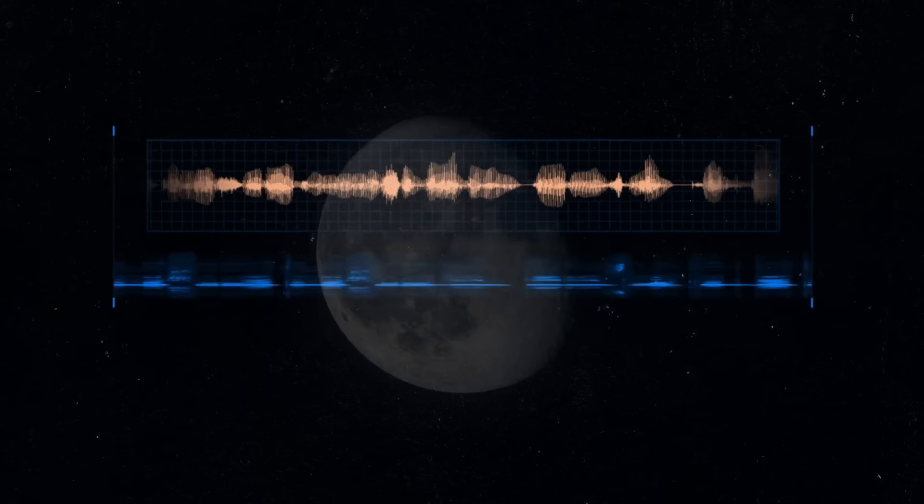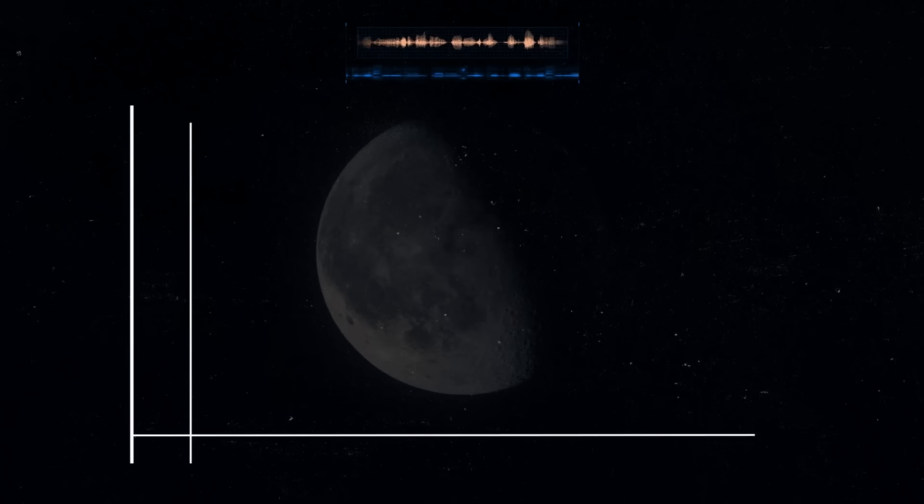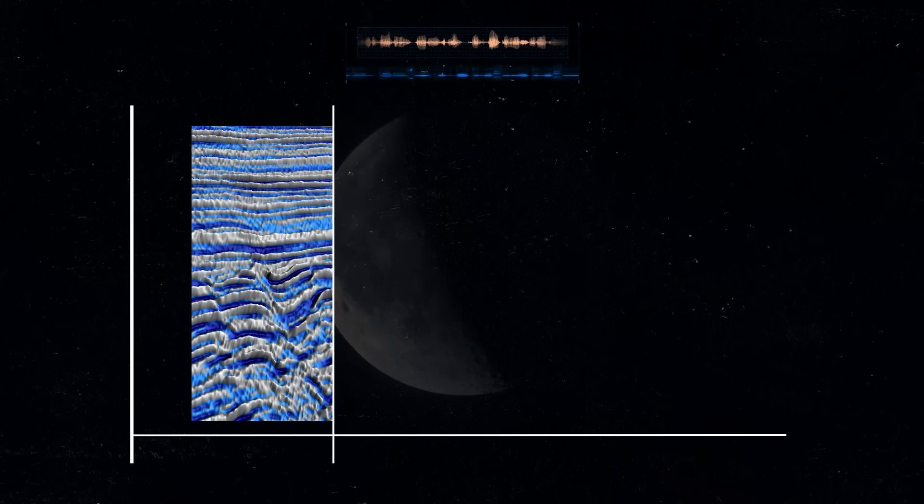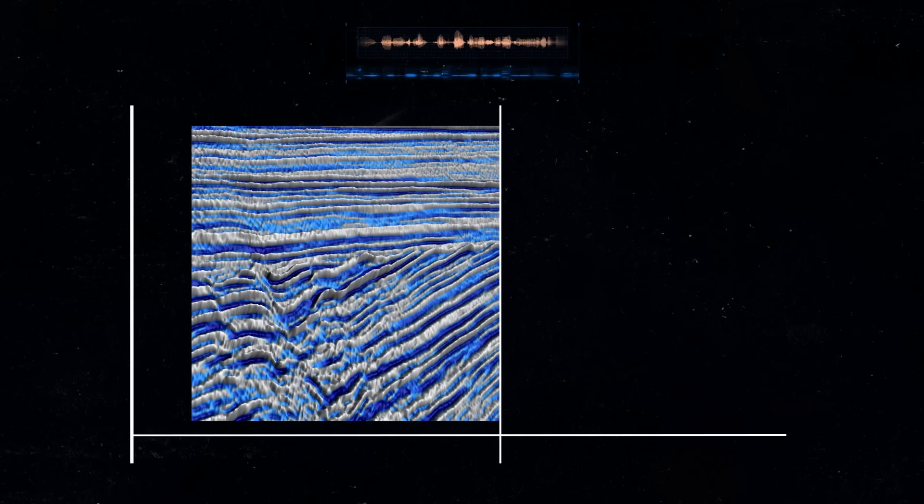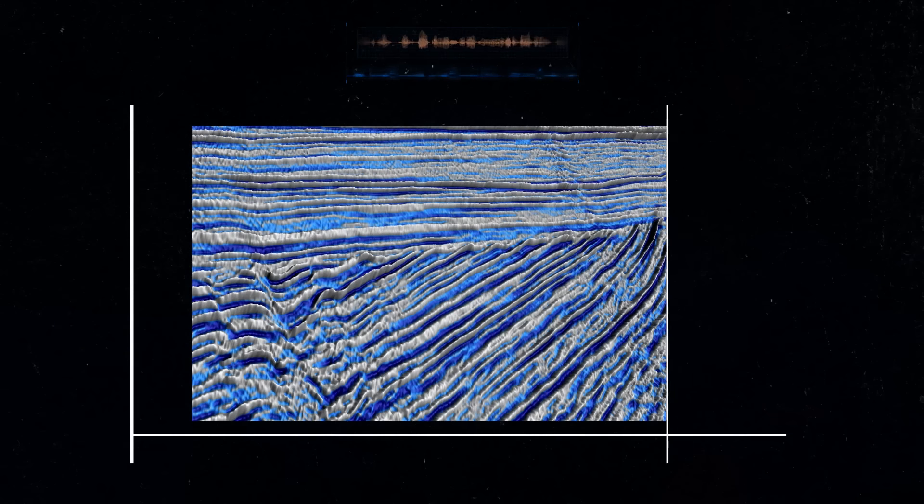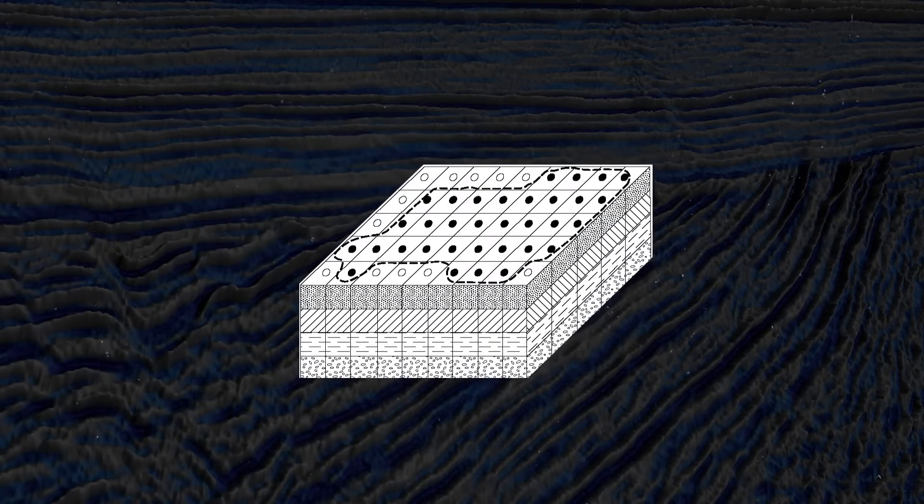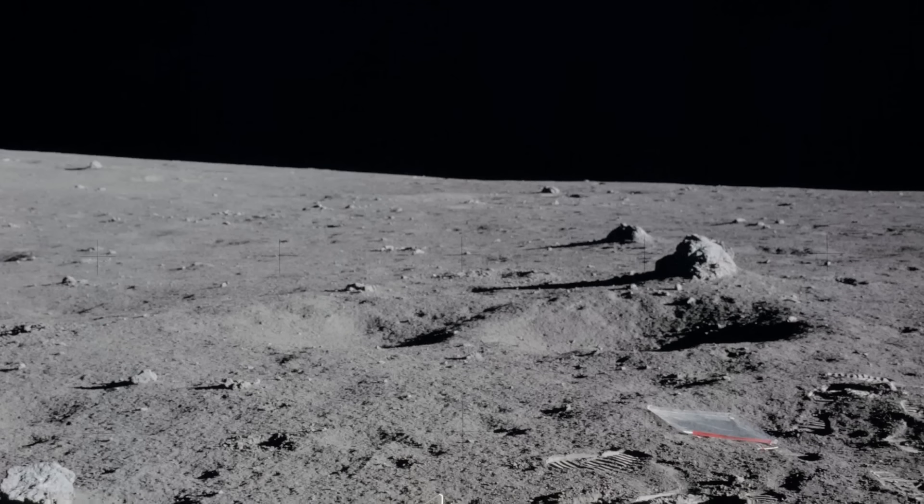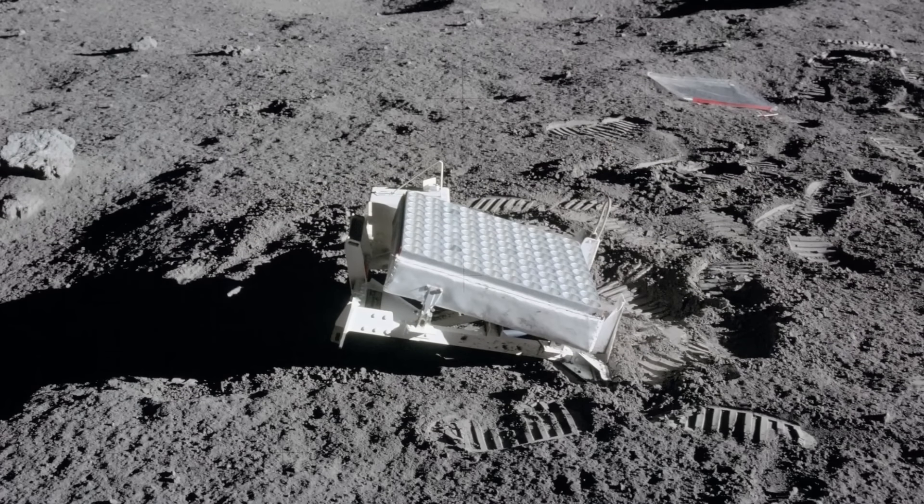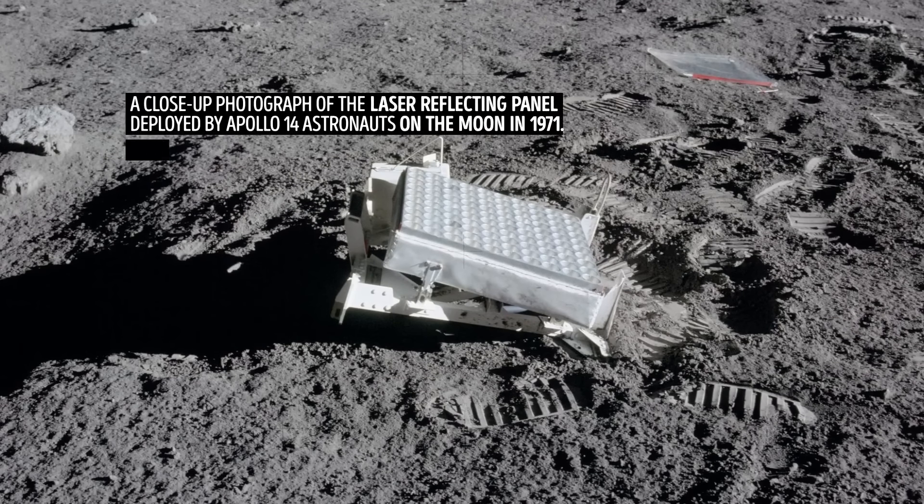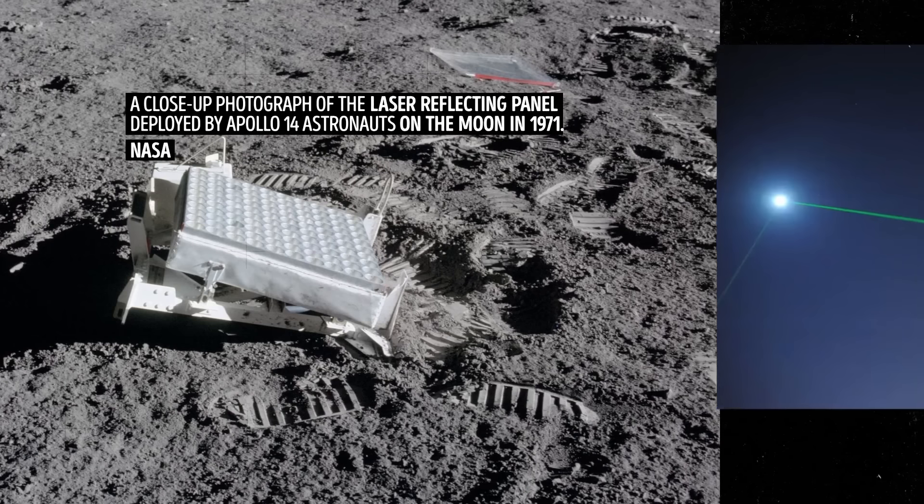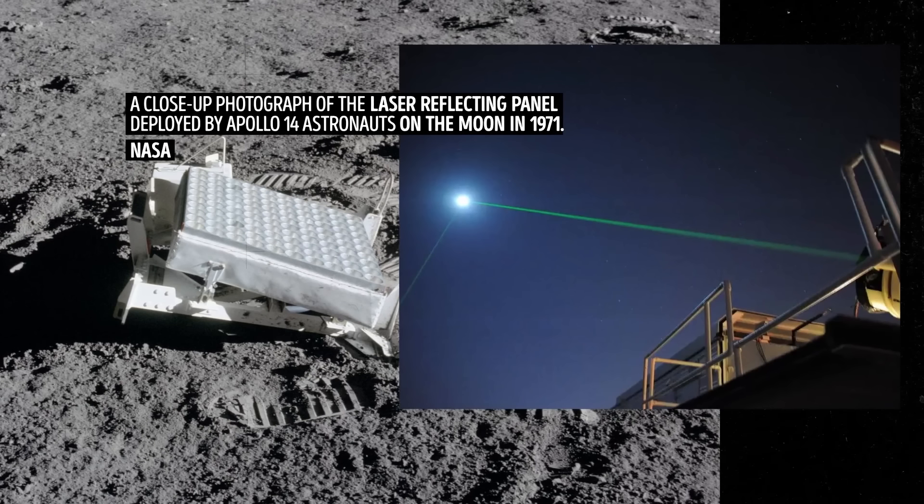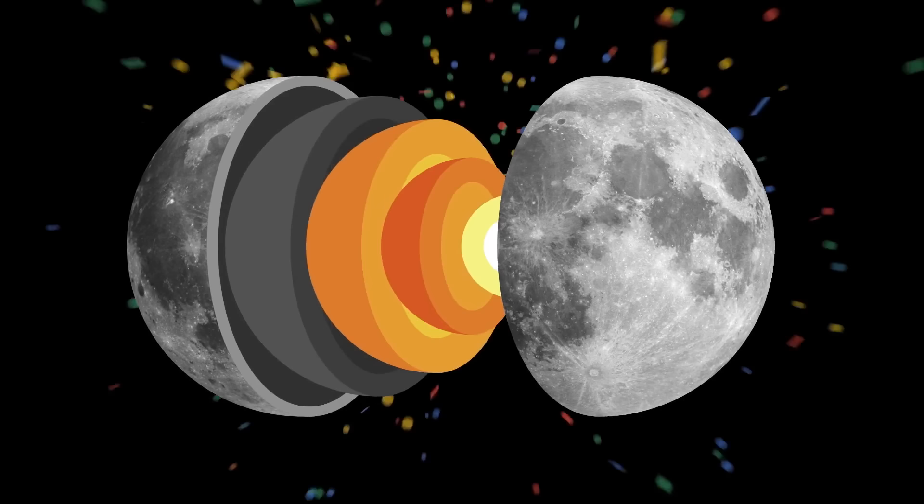When quakes or moonquakes happen, they generate sound waves. And by carefully listening to and studying these waves, scientists can create a detailed map of what's inside the object. They can figure out things like different layers, what they're made of, and how they're arranged. To check the moon's deep interior, scientists also use something called laser ranging. This method measures the distance between the surface of the Earth and the moon very precisely.